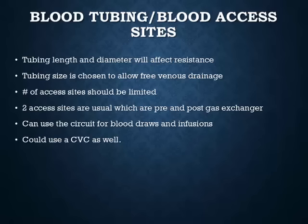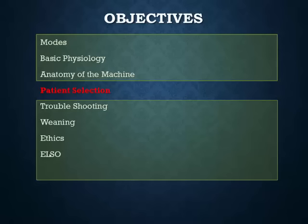Blood tubing and access sites are also a science unto themselves. Tubing length and diameter affect resistance — too large means low resistance, too narrow means pressure problems. Tubing size is chosen to allow free venous drainage. The number of access sites should be limited, typically two: pre- and post-gas exchanger. You can use the circuit for blood draws, but you can similarly use a CVC. At the time of cannulation, ask for a central line to be placed at the same time if the patient doesn't already have one.